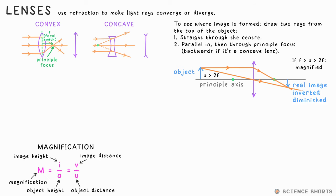You'll also notice that the image is smaller than the object, so we say it's diminished. It's also upside down, so we say it's inverted.